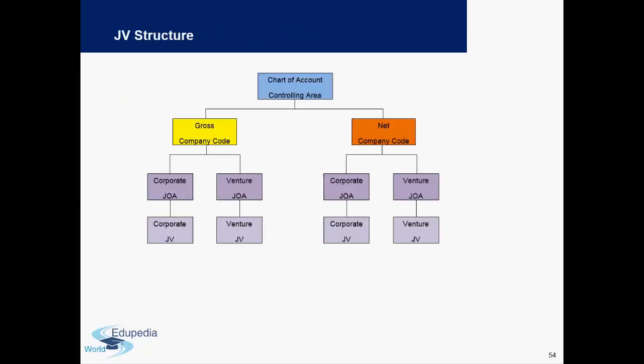This is an example of how a joint venture would be created, where you have two different company codes — one gross and one net company code — and under that you will have different joint venture agreements for corporate and for ventures.